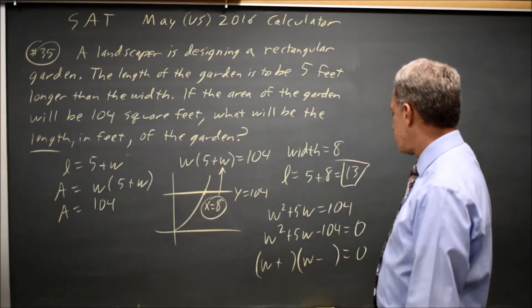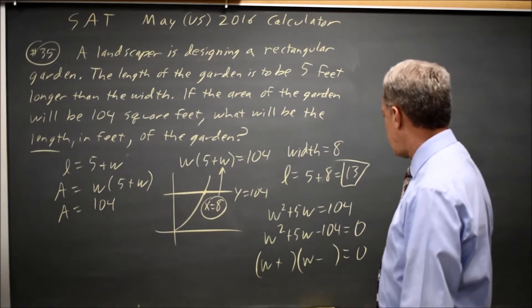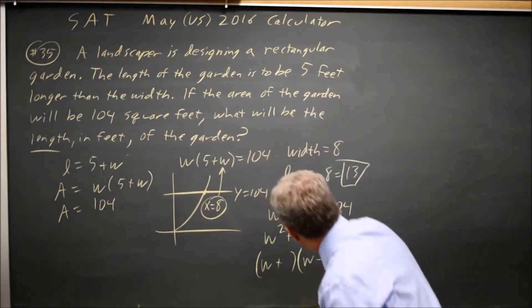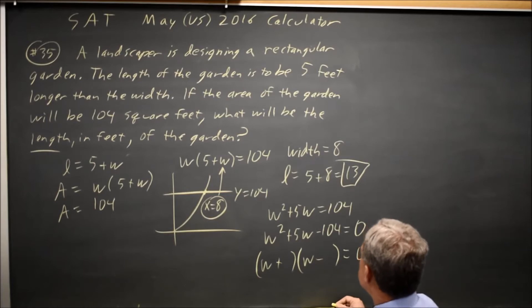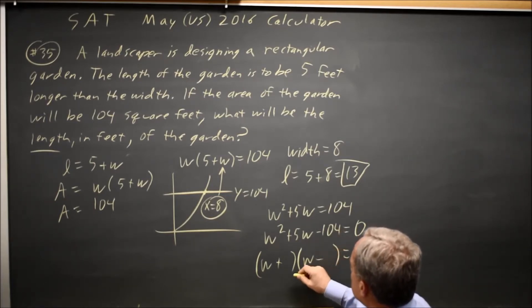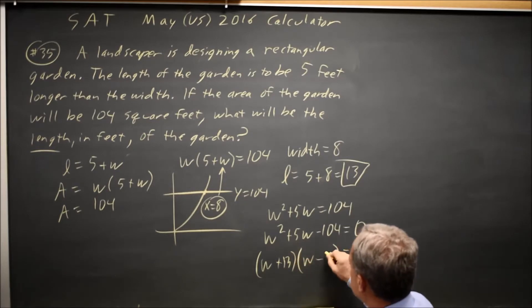One of them is 13, and one of them is 8, because 13 times 8 is 104, and the 13 has to be positive, and the 8 has to be negative, and that works for FOIL.